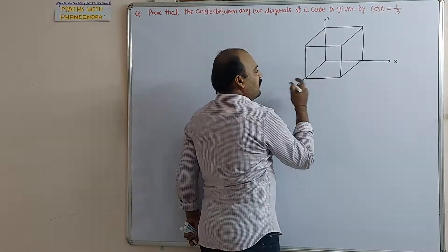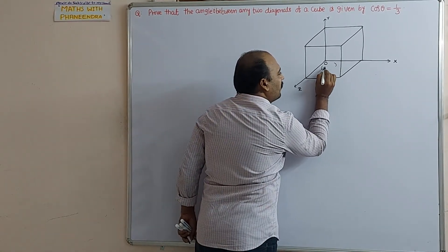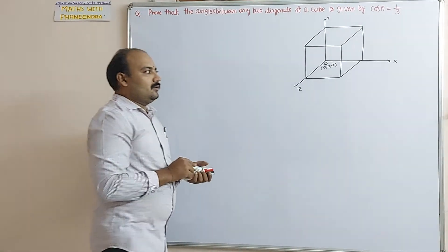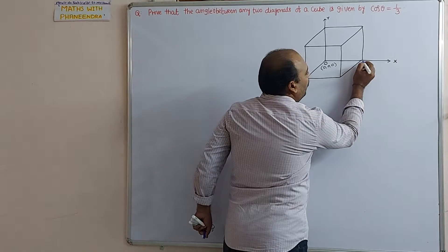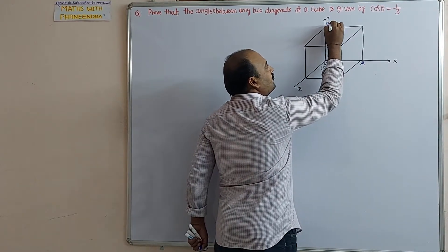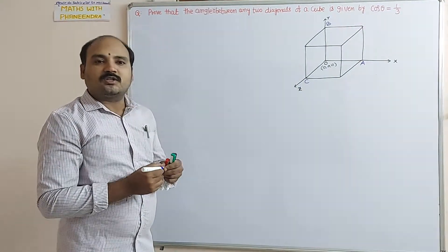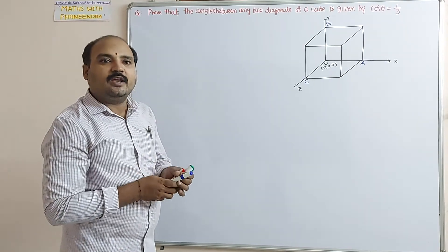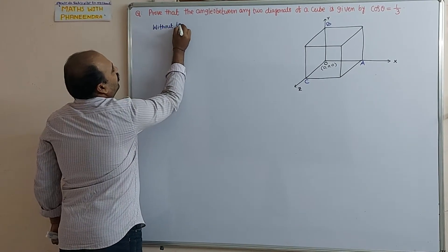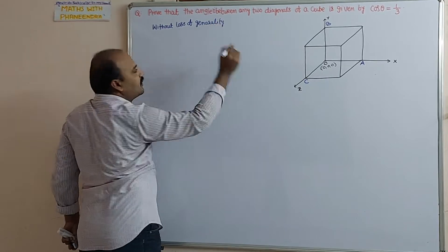The point of intersection of the x-axis, y-axis, and z-axis is the origin. So the coordinates of the origin in space are (0, 0, 0). The point which lies on the x-axis is A, the point on the y-axis is B, and the point on the z-axis is C. Without loss of generality, we are considering a unit cube.